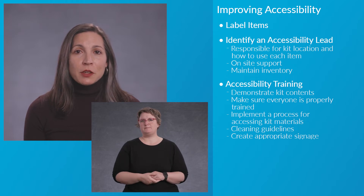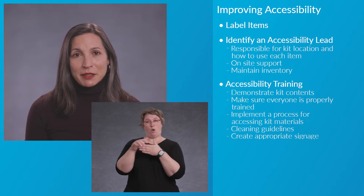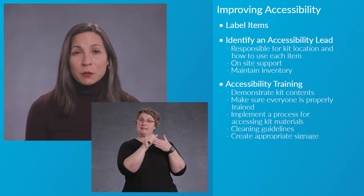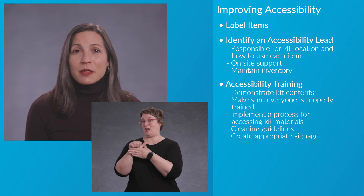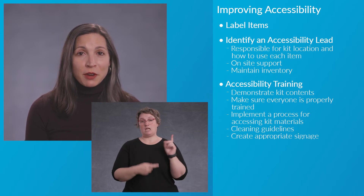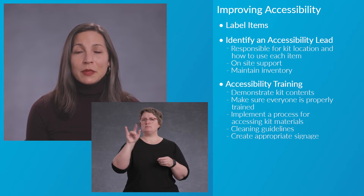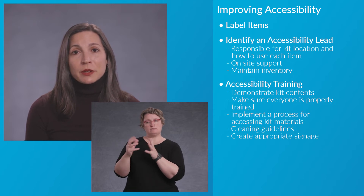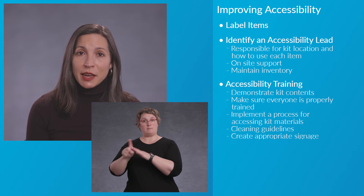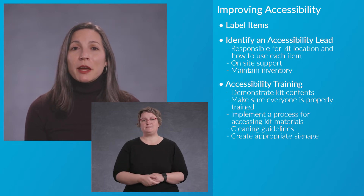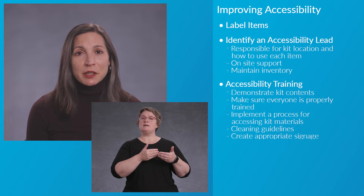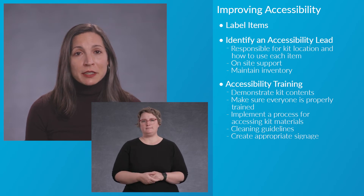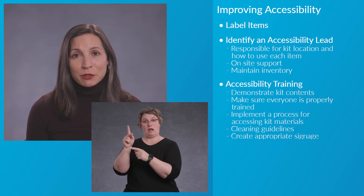Third, we recommend that you train all staff and volunteers about accessibility and what is available in your kits. Your accessibility lead staff person would be a great person to lead this training. They can show staff and volunteers the kit and its contents. Make sure everyone has been briefed on how to identify and respond to accessibility needs using items in each kit. Implement a process so folks know how to get kit materials the moment they need them. Make sure everyone knows that they are expected to clean and return items after use.